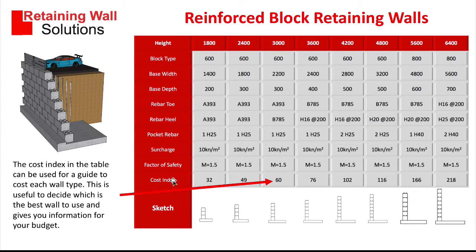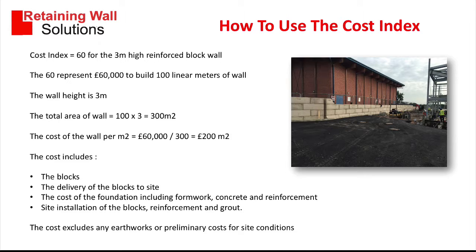The cost index at the bottom line is an indication of cost. For example, an index of 60 means it's £60,000 to build 100 linear meters of wall 3 meters high. So using that calculation, that works out to £200 per square meter. This allows you to look at various heights of retaining walls and different methods of construction and compare how much each one costs. It's just an indication and gives you a bit more information.